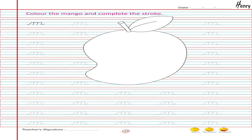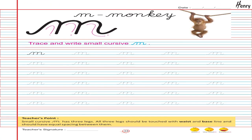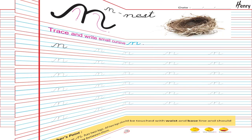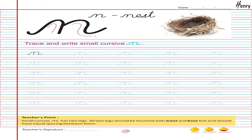Color the mango and complete the stroke. M. Monkey. Trace and write small cursive M. N. Nest. Trace and write small cursive N.